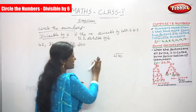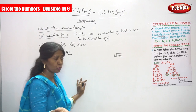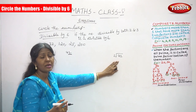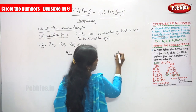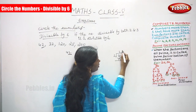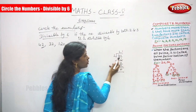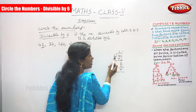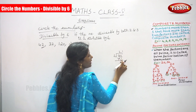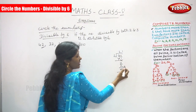Actually you don't need to do the full division — since it ends with 2, it's automatically divisible by 2. But for clarification: 2 × 2 = 4, bring down the 2, 2 × 1 = 2, remainder 0. So 42 is divisible by 2.